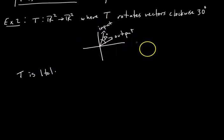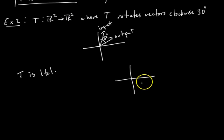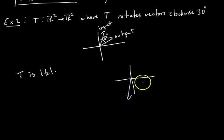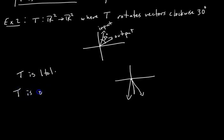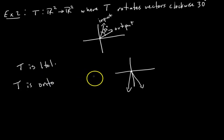Is it onto? Can I get any vector in the output space R2 by taking some appropriate input and rotating it 30 degrees? Yes, you can. Pick any vector — it could be an output of the transformation, and the input would just be that vector rotated 30 degrees counterclockwise. I could find a corresponding input for any vector in R2, so T is onto as well.